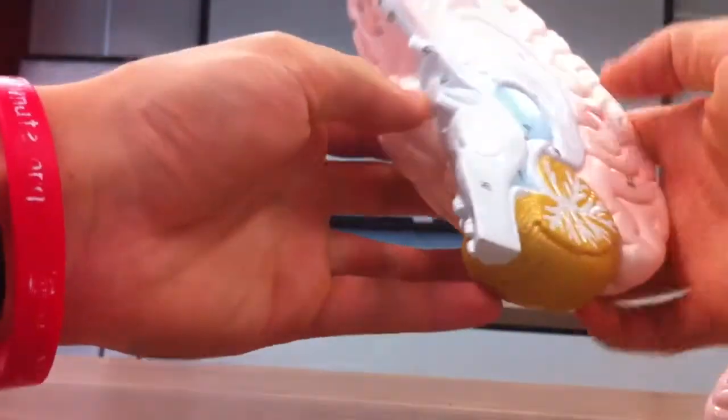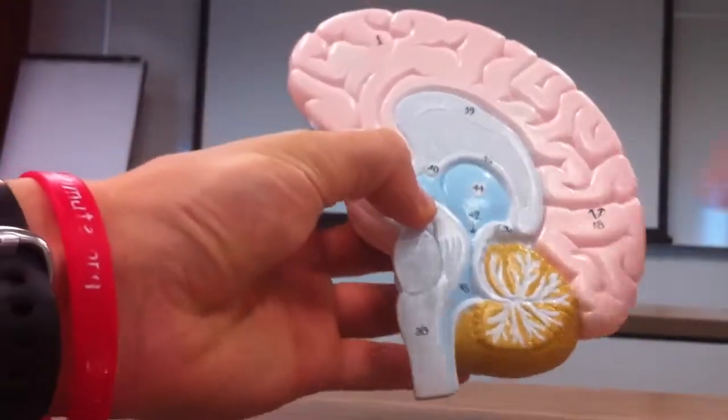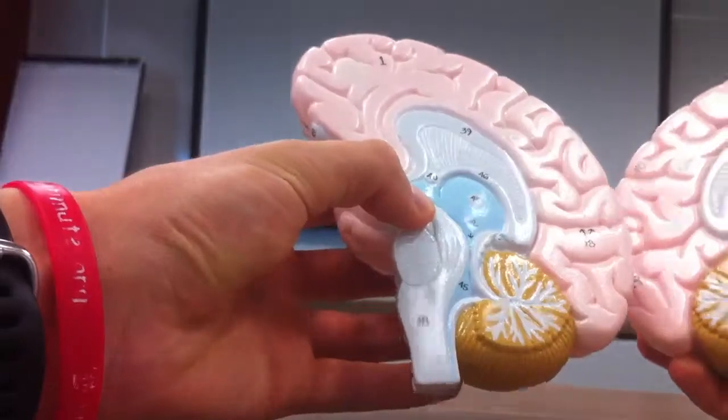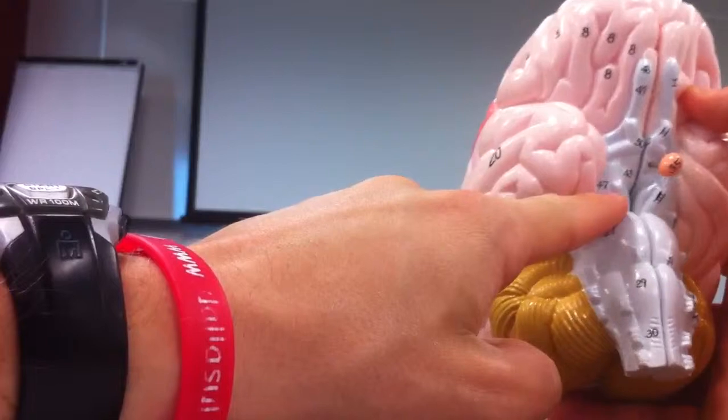46 is the fornix. 47 is the cerebral peduncle.